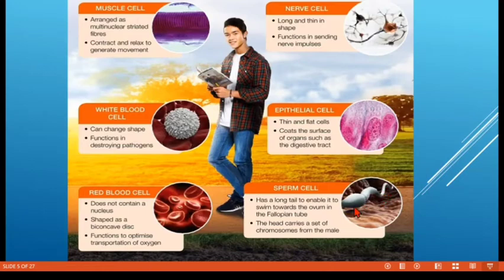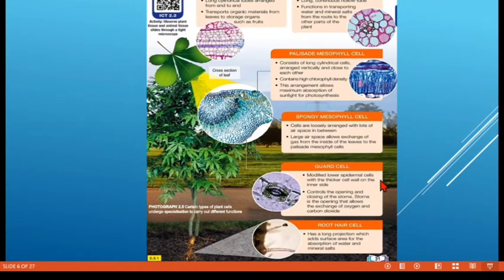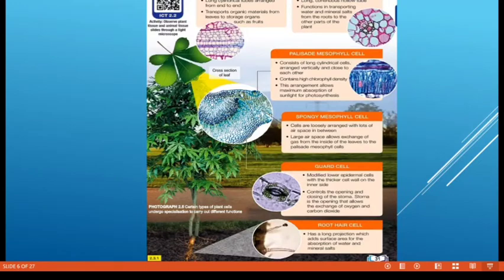The sperm head carries the chromosomes from the male. When fertilization occurs, only the head will fuse with the ovum — the tail remains outside. So those are examples of human cells. Now for plants, we have some types of cells.